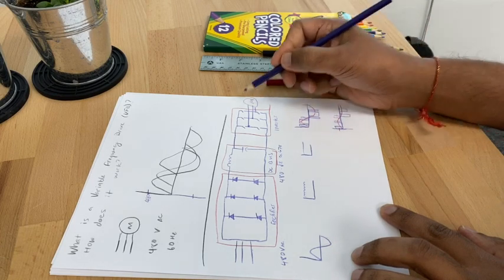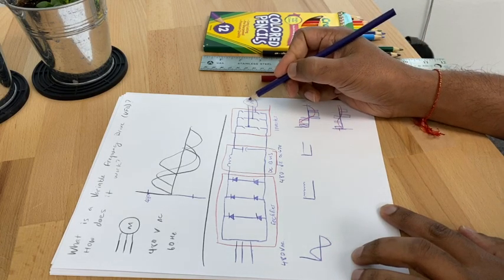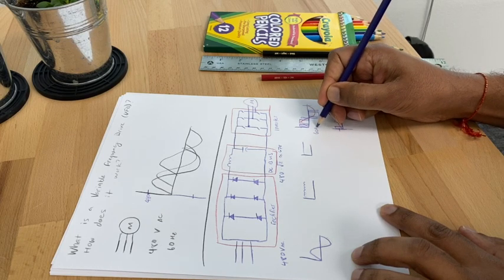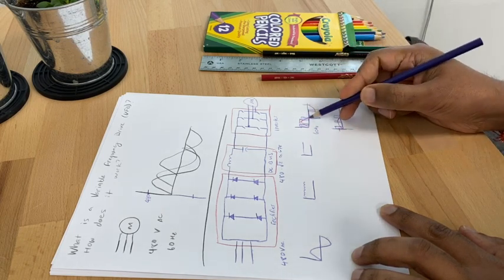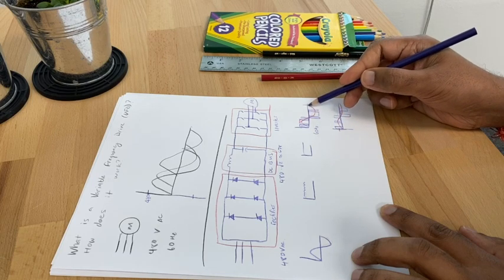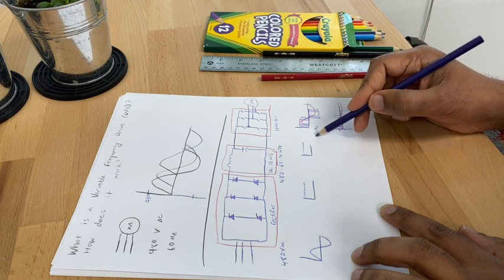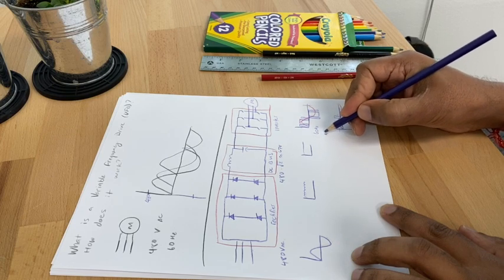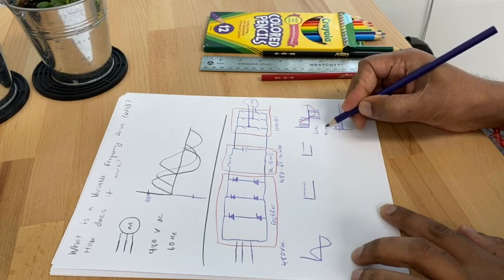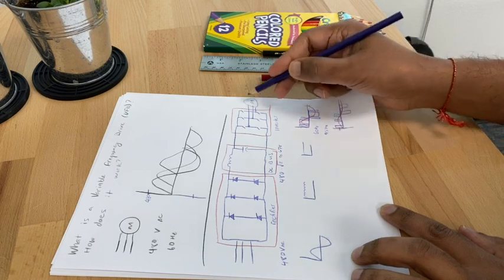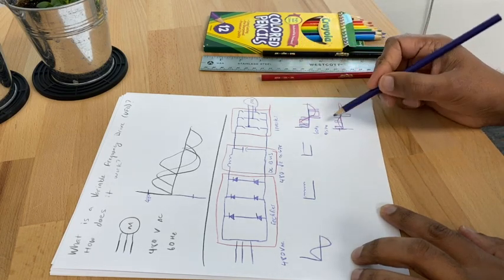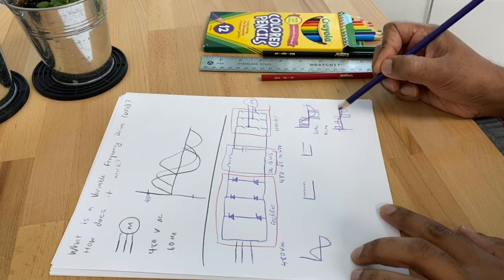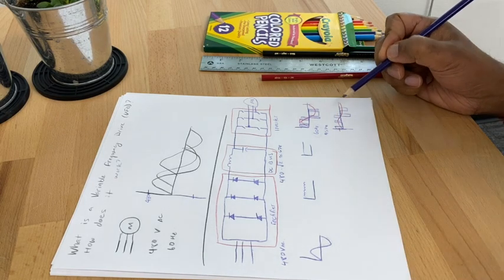Most motors operate at 60 hertz, at least in the US. If we were to change that frequency down to, say, 45 hertz, it would proportionally reduce the speed of the operating motor. And by changing the voltage, we're able to adjust the torque going into the motor. There's a lot more to it than that, but at a high level that's a brief explanation.